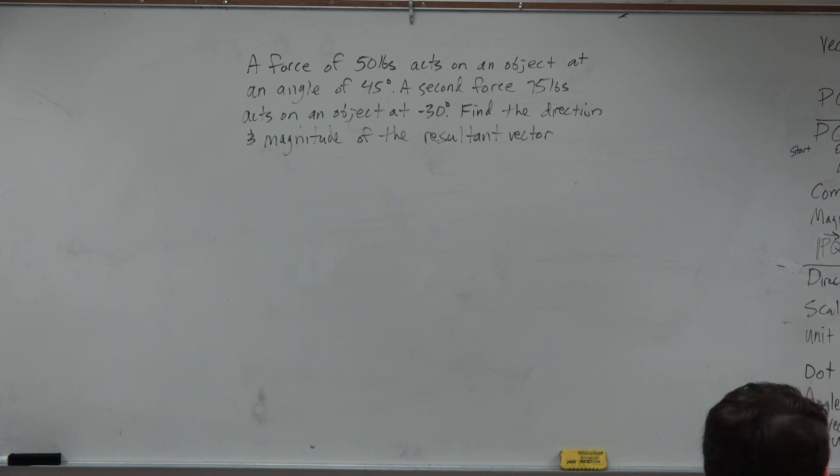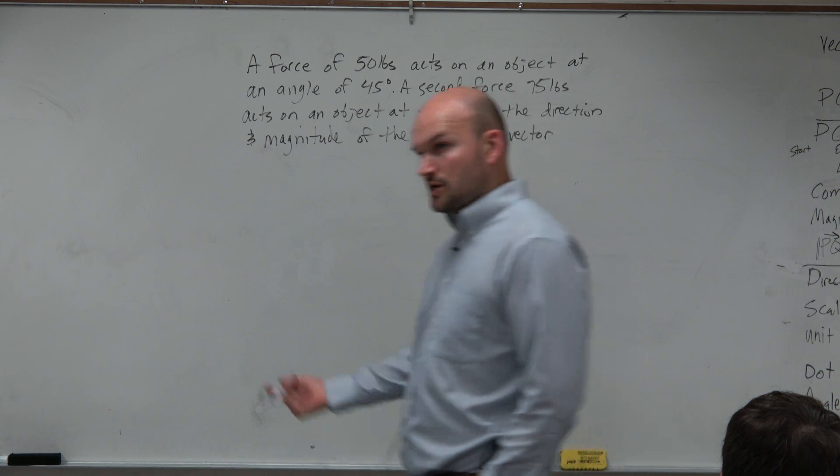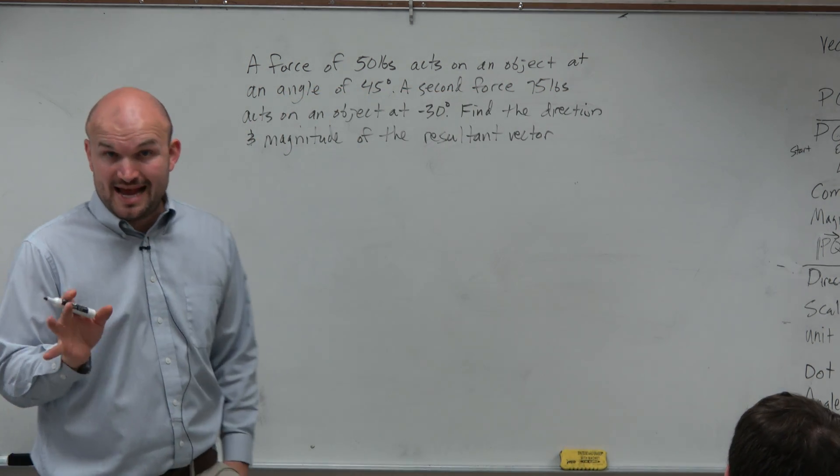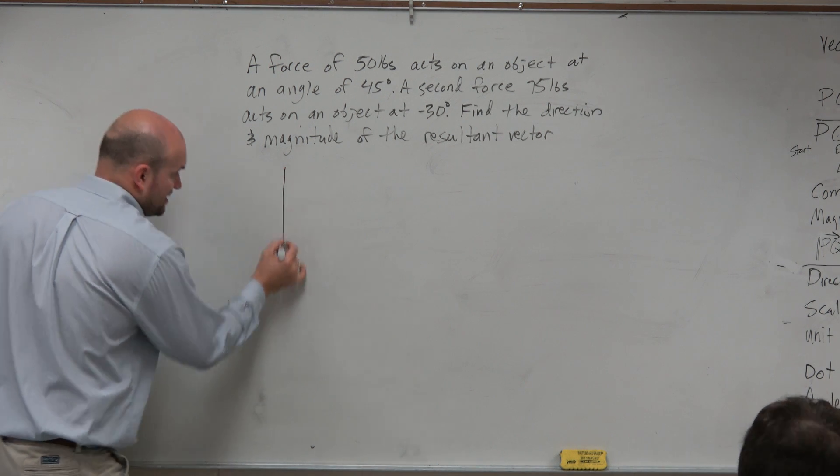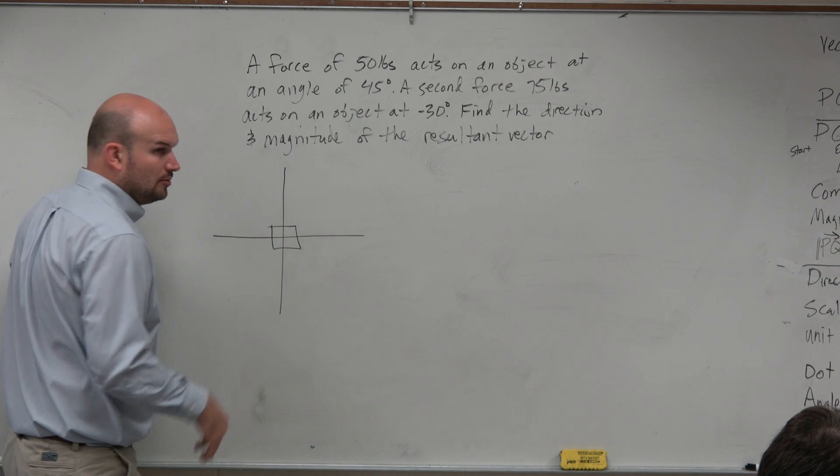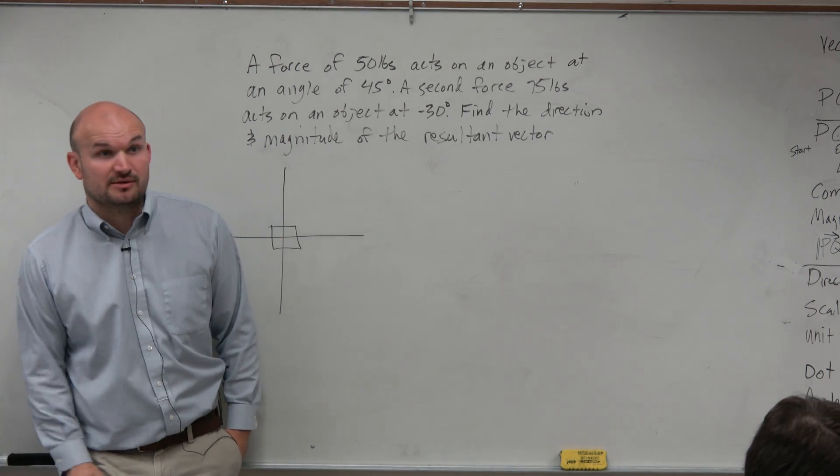So in this example, guys, it says a force of 50 pounds acts on an object at an angle of 45 degrees. So let's first of all pick out, now we are talking about angles. So immediately with angles, I'm going to say, let me draw an xy-axis. And let's just say here's the object, a nice little box. I have no idea what the object is, so I'm just going to make a box.